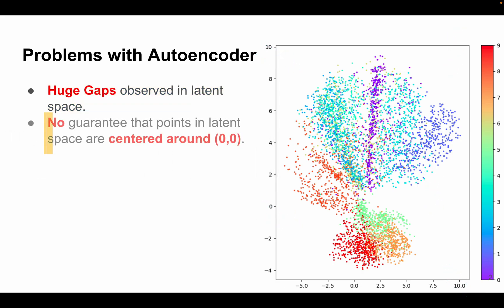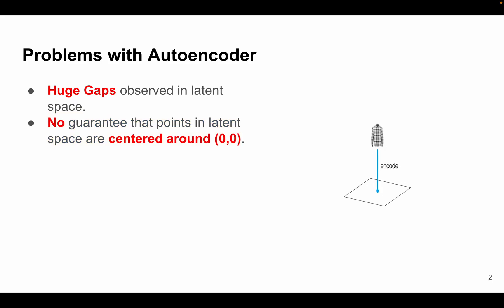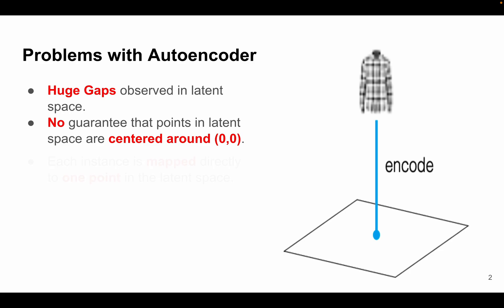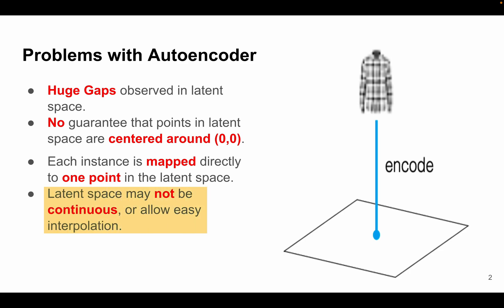The second problem with autoencoder is that it is not even guaranteed that points will be centered around 0,0. Now this makes sampling our latent space problematic. The third limitation is that each instance is mapped directly to one point in the latent space as we can see in this diagram. The next limitation is latent space might not be continuous or easy for interpolation.